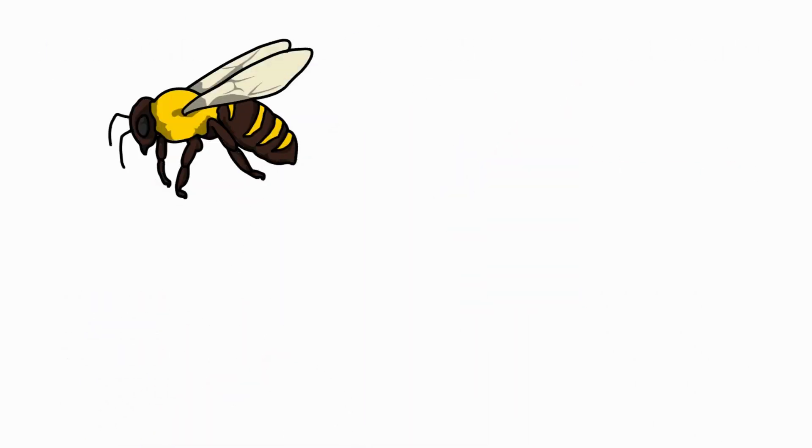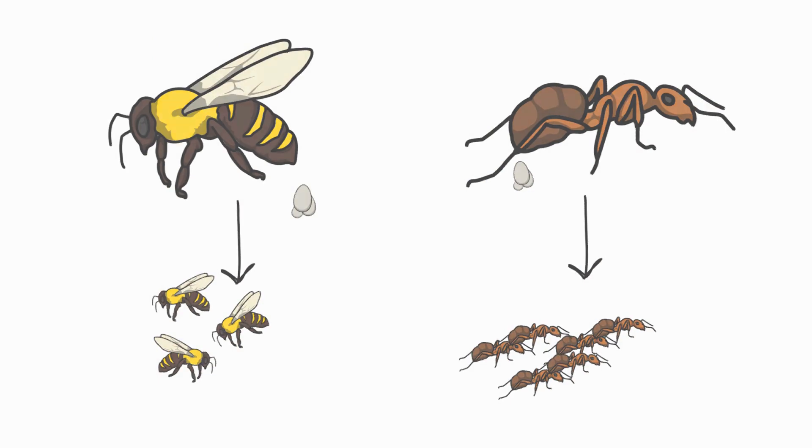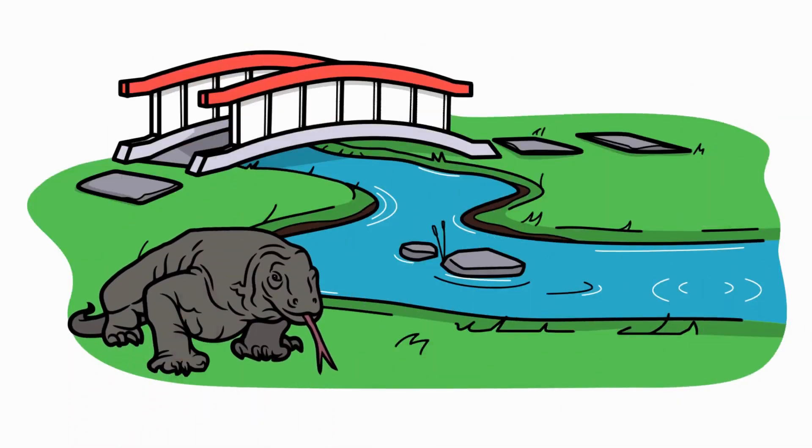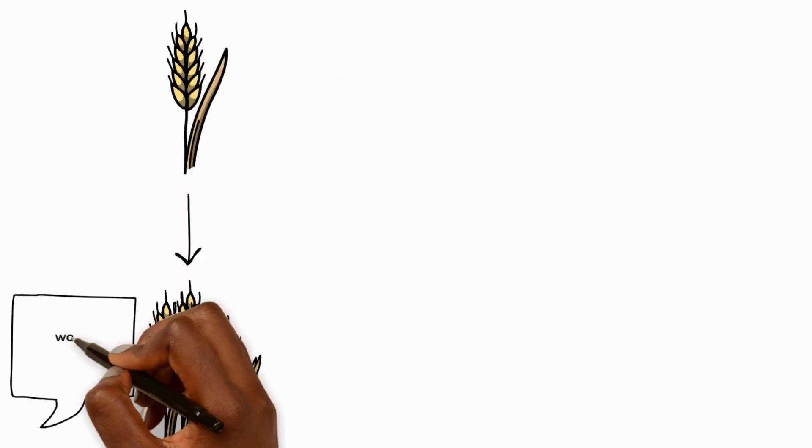Female animals like bees and ants can release eggs that develop into offspring without being fertilised by a sperm. And did you know, a Komodo dragon at Chester Zoo in the UK laid eggs without ever being in contact with a male? Asexual reproduction allows plants and animals to reproduce quickly, without having to spend time finding a mate.